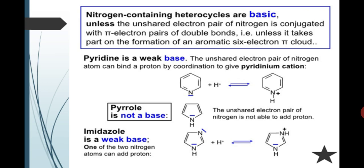So pyridine is a weak base. The unshared electron pair of nitrogen atom can bind a proton by coordinating to give pyridinium cation. This is the reaction.